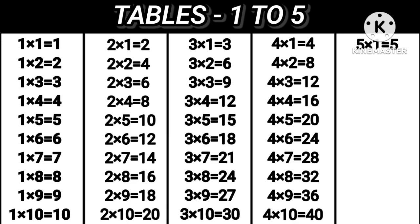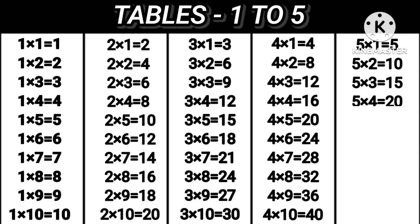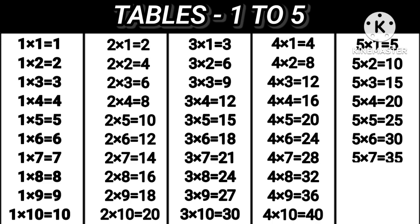5 1s are 5. 5 2s are 10. 5 3s are 15. 5 4s are 20. 5 5s are 25. 5 6s are 30. 5 7s are 35. 5 8s are 40. 5 9s are 45.